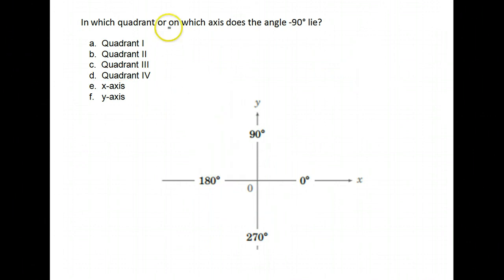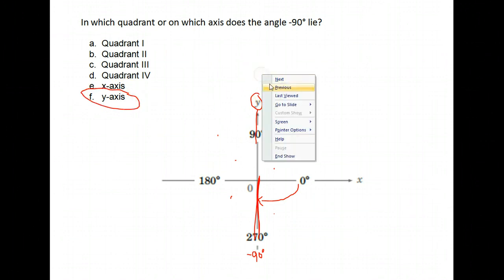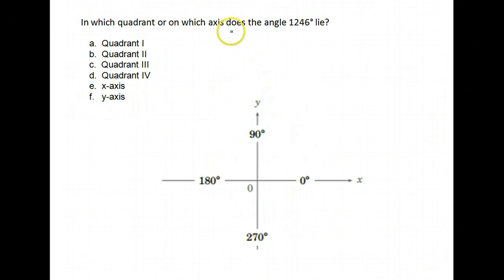Where does negative 90 lie? Now negative 90, remember, means we're opening 90 degrees, but in the clockwise direction. So we're opening downward 90 degrees, puts me right here. This would be negative 90 degrees. It is on the, it's not in a quadrant, it's on an axis, specifically notice it's located on the y-axis.